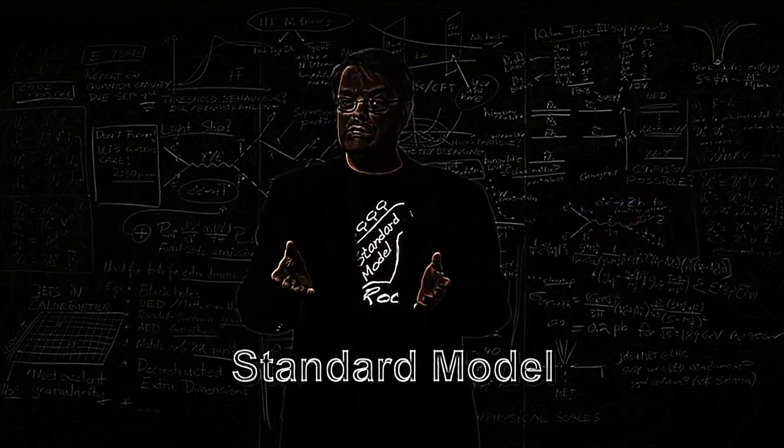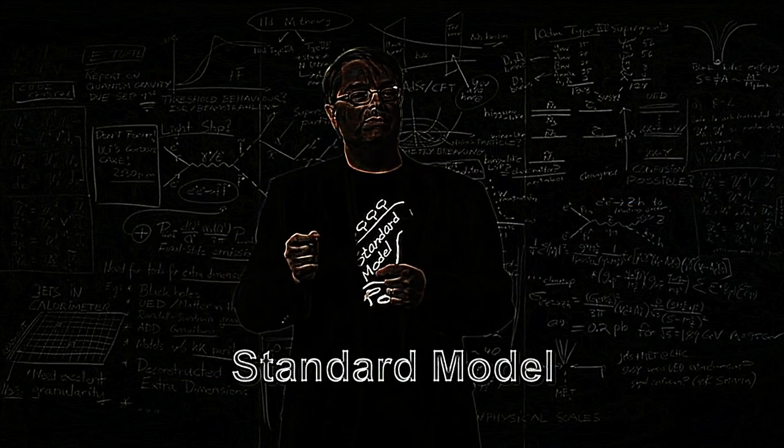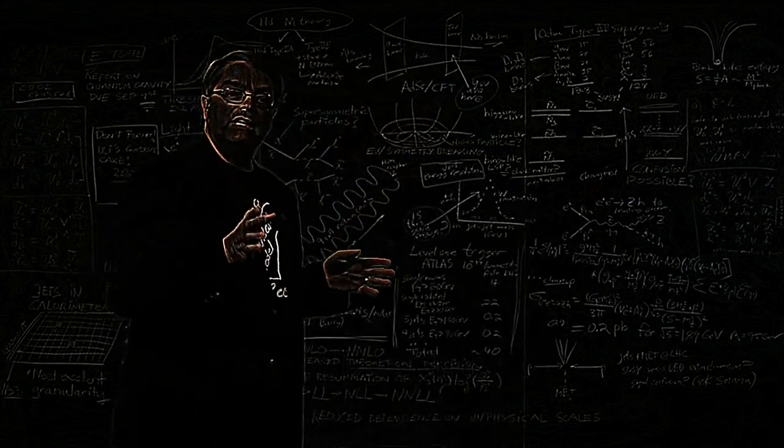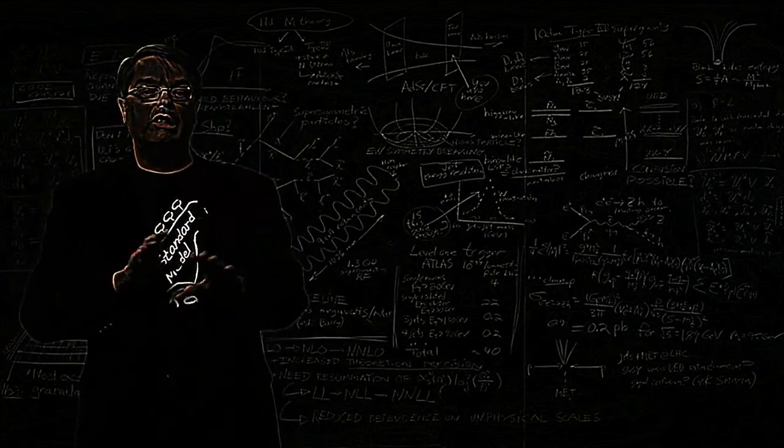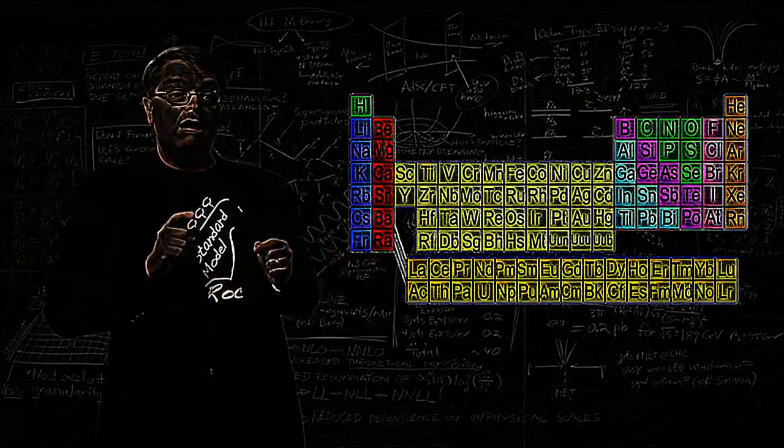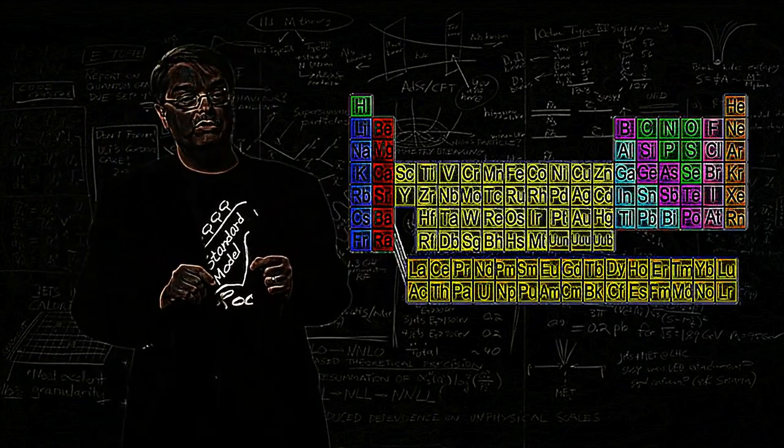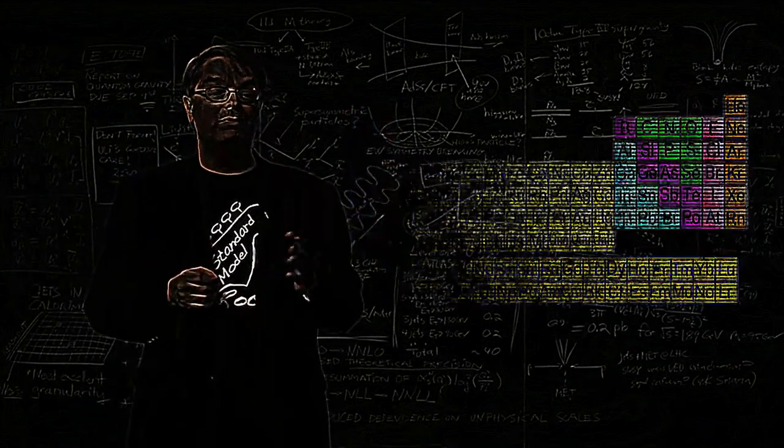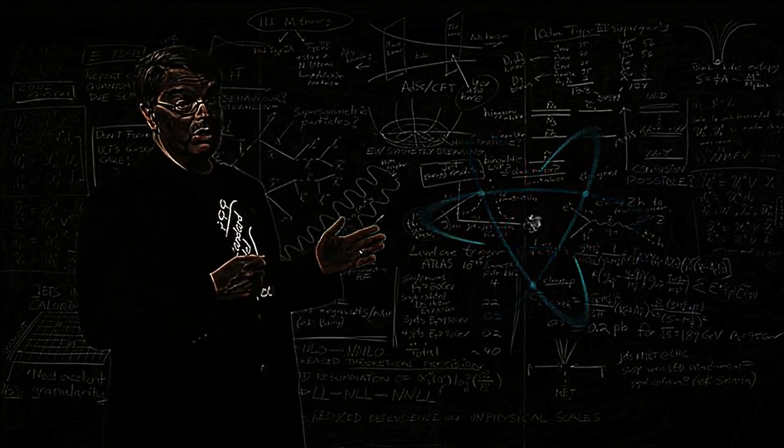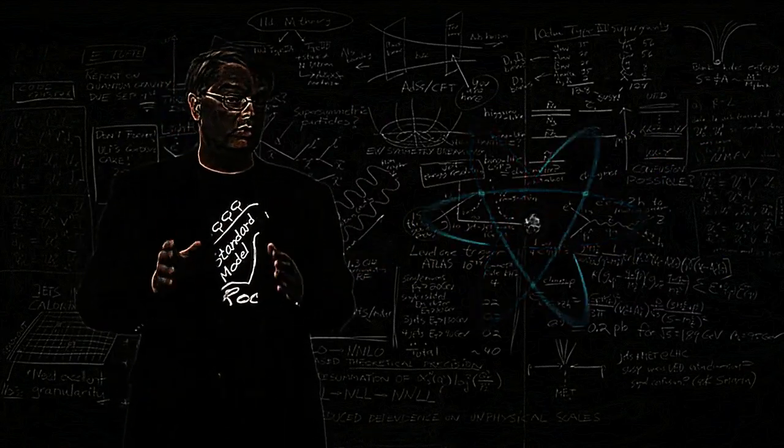To understand what goes into the standard model, we need to recall some ideas we might have learned from school. If you've ever taken a chemistry class, you've heard that all of the matter of the universe is made of about 100 elements. However, even if you've never studied chemistry, you've probably heard that all matter is made of atoms.